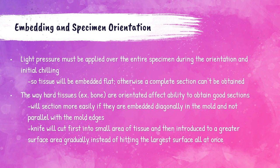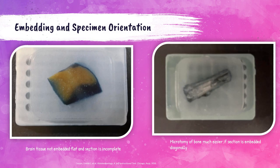When hard tissue is embedded diagonally, the knife of the microtome will first cut into a smaller area and reach a greater surface area slowly, allowing the specimen to be cut much more easily. One photo shows brain tissue embedded improperly — light pressure was not applied over the entire specimen while being chilled, resulting in it not being embedded flat; the darker area at the top has not been sectioned. The blue color is caused by an indicator desiccant in the absolute alcohol. Another photo shows a properly positioned and embedded bone specimen; microtomy of bone is substantially easier when the bone is placed diagonally in the embedding medium.